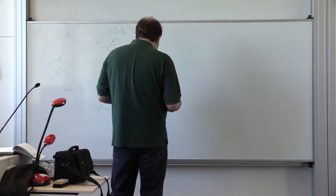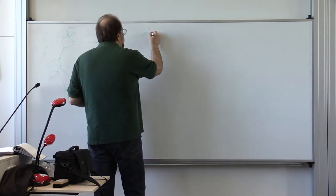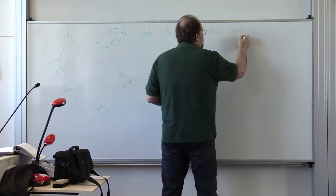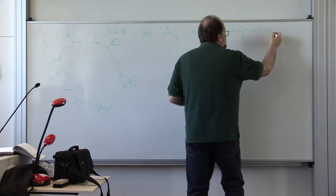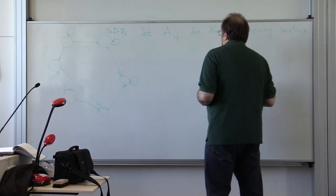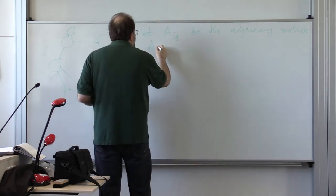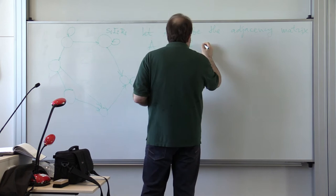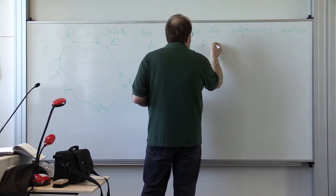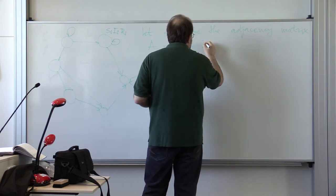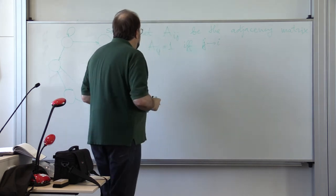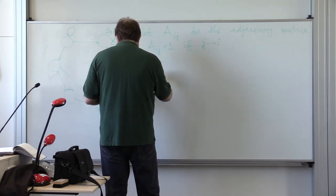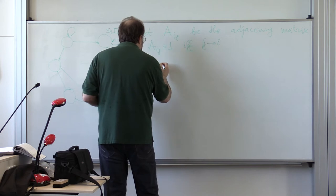So, what are the differential equations then? Well, let AIJ be the adjacency matrix. So AIJ equals to 1 if and only if there exists a link, say, from I to J, or from J to I, maybe. So, then we have the following differential equations for our SI model.